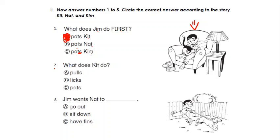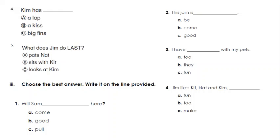Question number two: What does Kit do? Kit the cat. What does it do? Pulls, kicks, or licks? The answer is licks, because the cat can lick. Question number three: Jim wants Nat to go out, sit down, or have fins? Nat is the dog, so what does he want Nat to do? He wants him to sit down. Number four: Kim has a lap, a case, or big fins? Now Kim is the fish, so what does it have? It has big fins, so the answer is C.